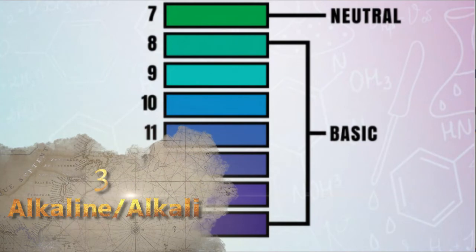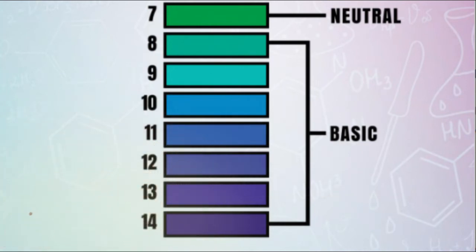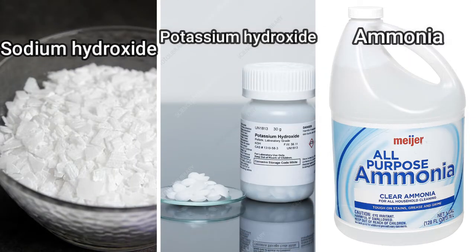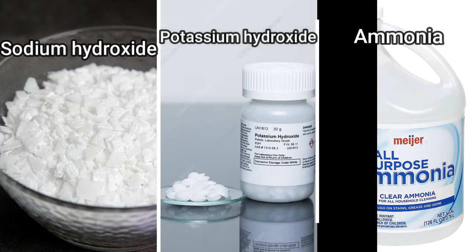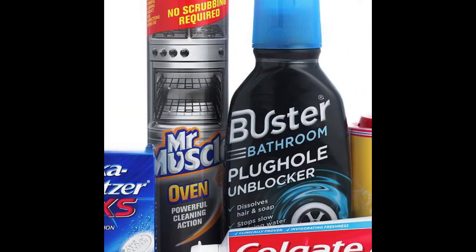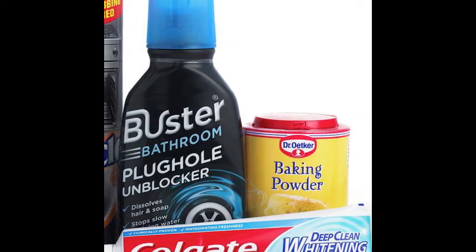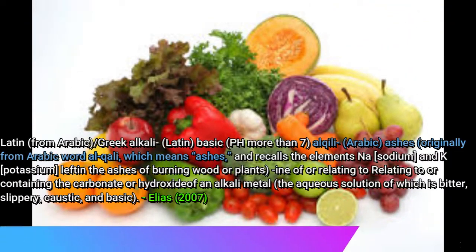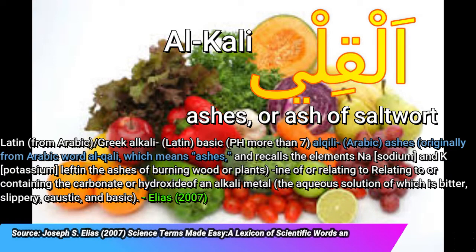Alkali is a substance that has a pH between 8 to 14. Examples of alkaline substances include sodium hydroxide, potassium hydroxide, and ammonia. Alkaline substances are commonly used in polishing and cleaning products. This word is derived from the Arabic word al-Qili, which literally means 'ashes' or 'ash of saltwort plants.'